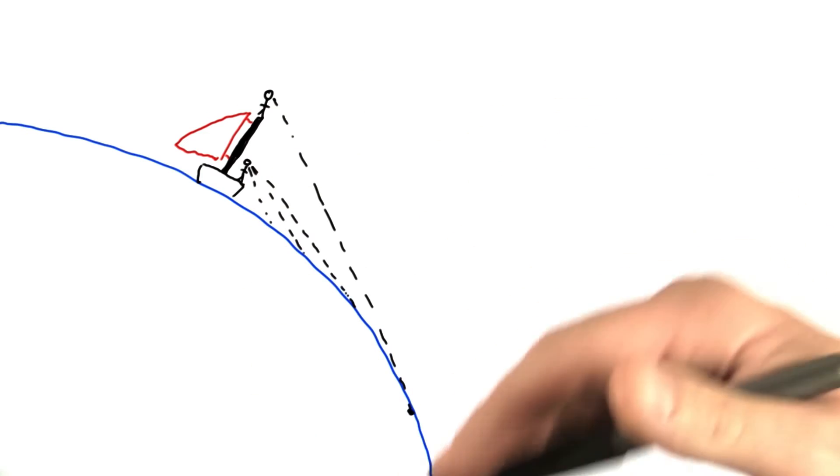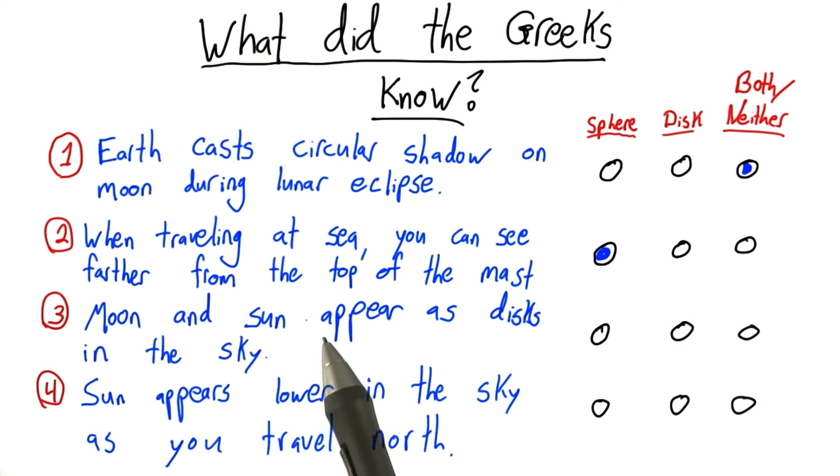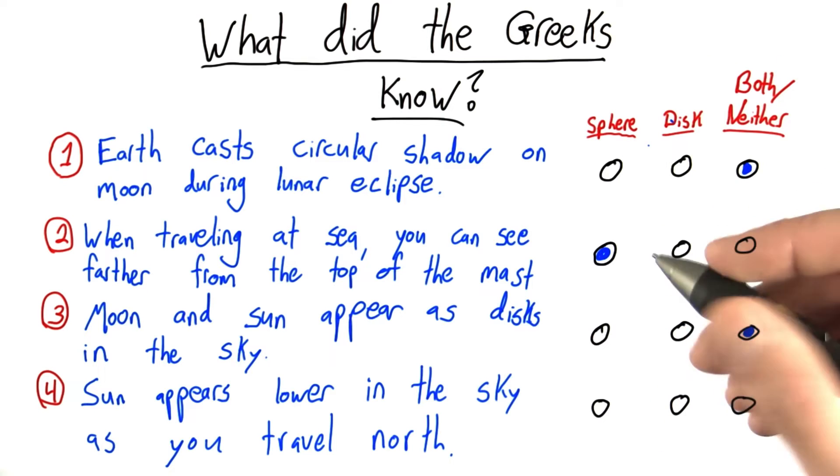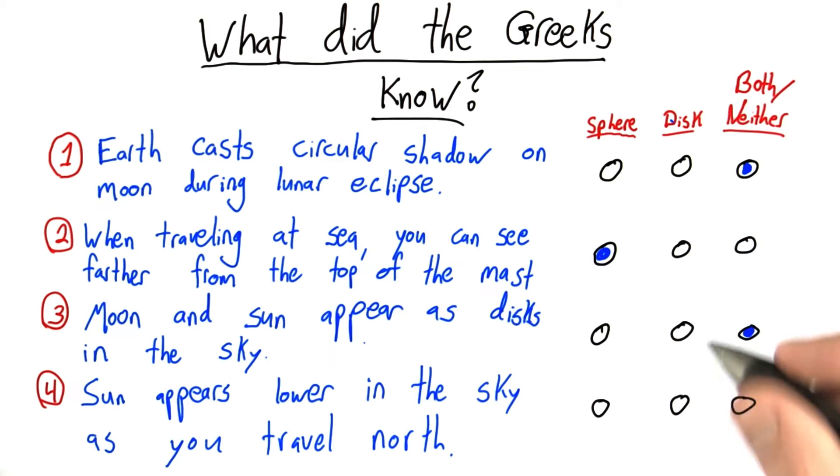The third option is about the Sun and the Moon, but we're not talking about the Sun and the Moon, we're talking about the Earth, so I don't think this is really relevant. Again, you can make some arguments about this pointing towards sphere or disk, and you should do that. Go to the forums and talk about this point, but I thought the best answer was neither.